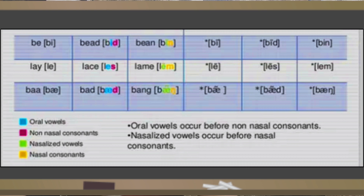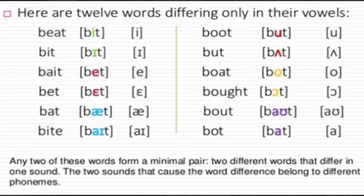The third example: Ba, Bad, Ban. Here are examples of words differing only in their vowels: Beat, Bait, Bat, Bite, Boot, Boat, Bought, Bout. Two of these words form a minimal pair — two different words that differ in one sound. The two sounds that cause the word difference belong to different phonemes.